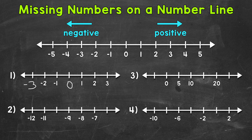Let's try another one and move on to number two. We're going to take a look at what we're given, starting with negative 12 and then negative 11 — so we have a distance of one there. Let's see if that applies to the rest of the number line. We have negative nine, negative eight, negative seven, so we can tell that we're counting by one.